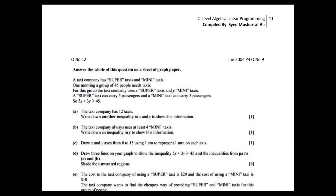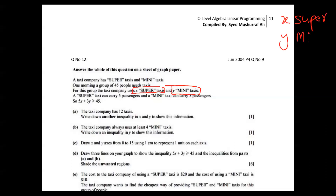In this question, we have a taxi company with two kinds of taxis: super and mini. In every linear programming question, we find out what X and Y are. Here X is super taxis and Y is mini taxis. My habit is to always write in the upper corner what X represents and what Y represents — it's very helpful for solving the question.